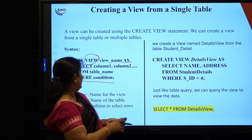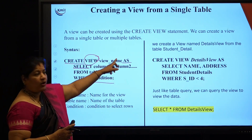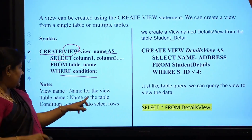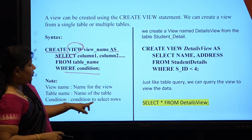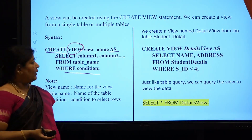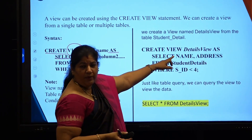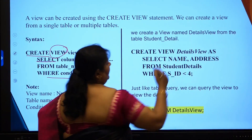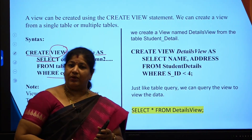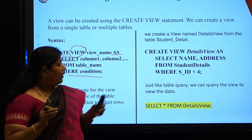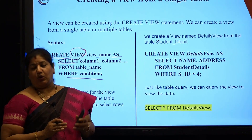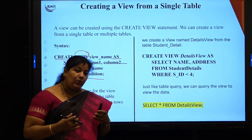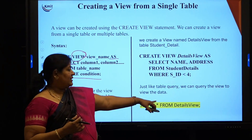Look at the example. The view name is the user-defined name we want to give. The column names are the attributes of the base table, and the condition is for selecting the rows. For example: CREATE VIEW details_view AS SELECT name, address FROM student_details WHERE student_ID is less than 4. When I want to see those students, I just say SELECT * FROM details_view.